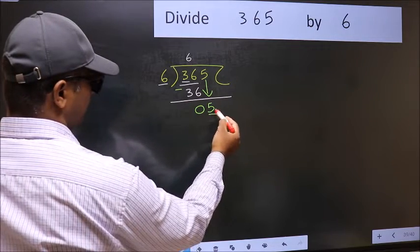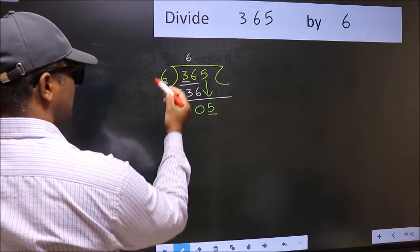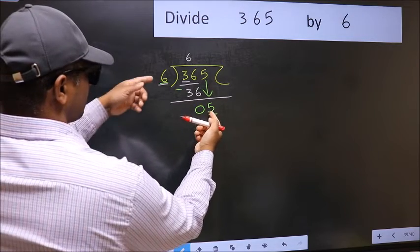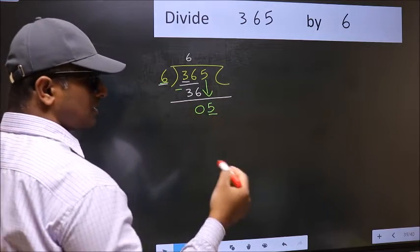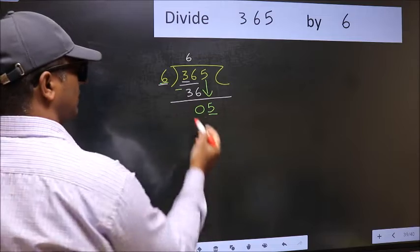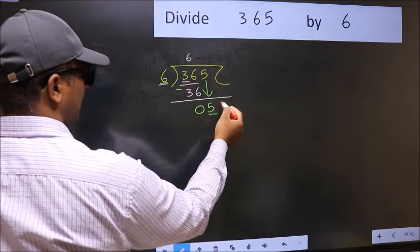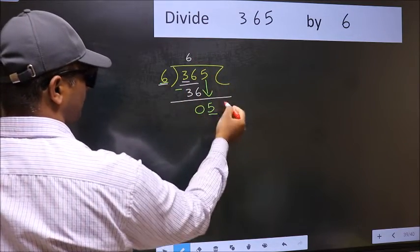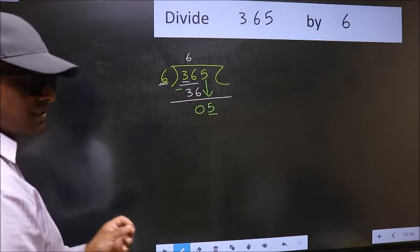Here we have 5 and here 6. 5 is smaller than 6. So what many do is, they directly put dot and take 0, which is wrong.